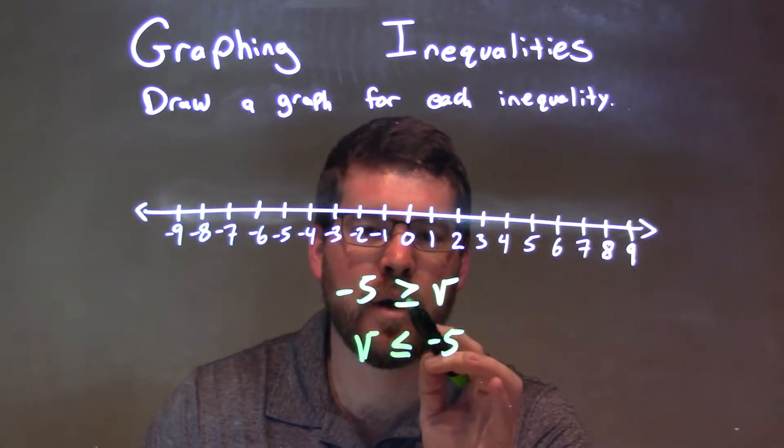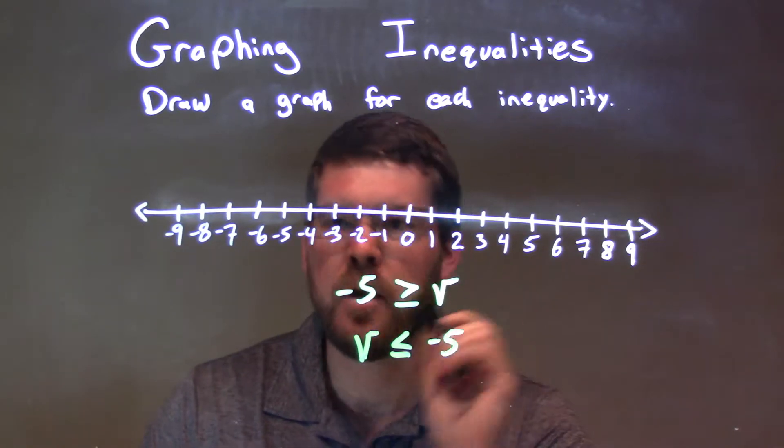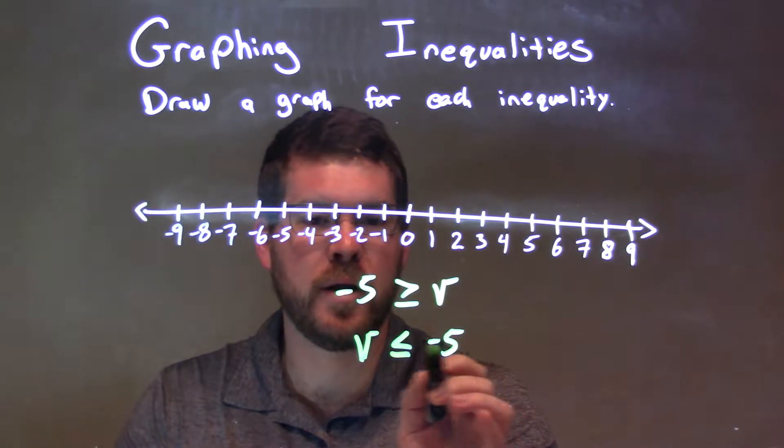Negative 5 being greater than or equal to V is the same thing as V is less than or equal to negative 5. So now we're at negative 5, that's our main point here.